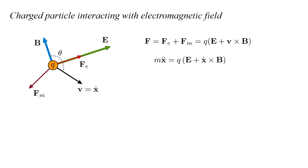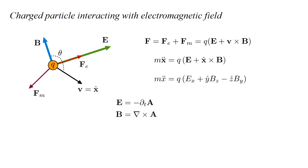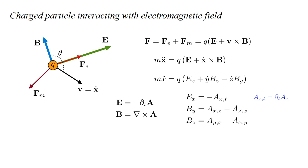Here X boldface is the vector position with components X, Y, and Z. Let's look at the first component of this vector equation: M X double dot equals Q times the quantity E_X plus Y dot B_Z minus Z dot B_Y. In video three, we showed that the electric and magnetic fields can be derived from a single vector potential A: E equals minus the time derivative of A, and B equals curl of A. From these relations, E_X equals minus A_X comma T, where the comma T notation is shorthand for the time derivative. B_Y equals A_X comma Z minus A_Z comma X, and B_Z equals A_Y comma X minus A_X comma Y.